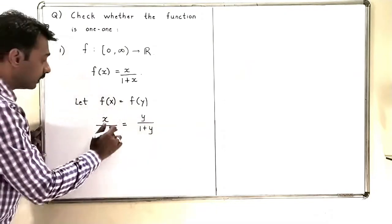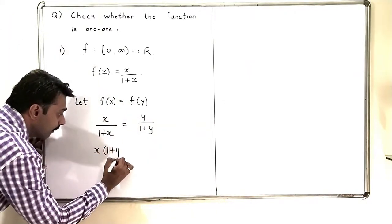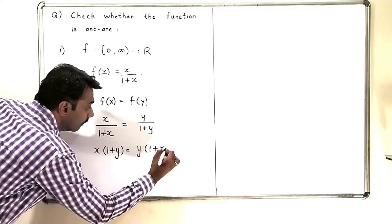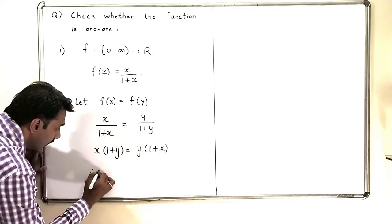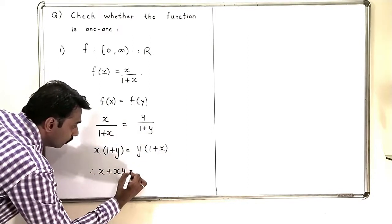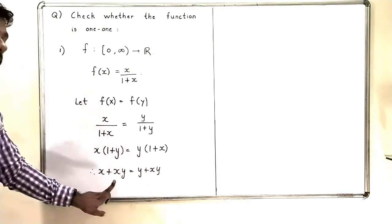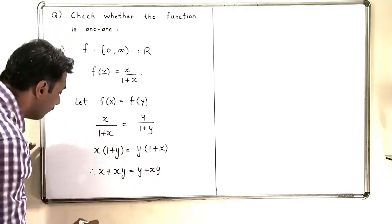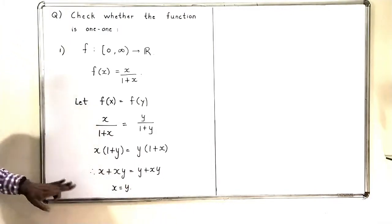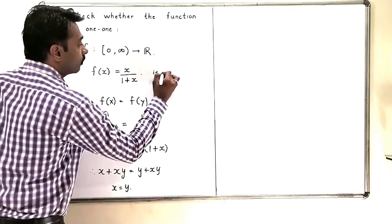I am going to simplify this. I get x(1 + y) = y(1 + x), which means x + xy = y + xy. When I cancel xy from both sides, I get x = y. So this means that this function is a one-to-one function.